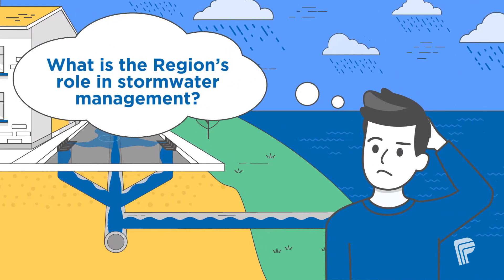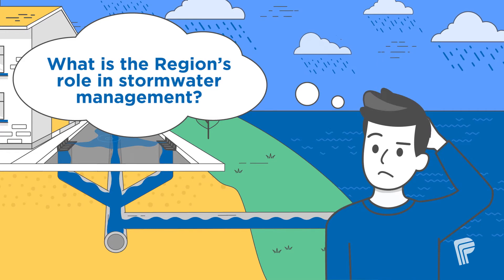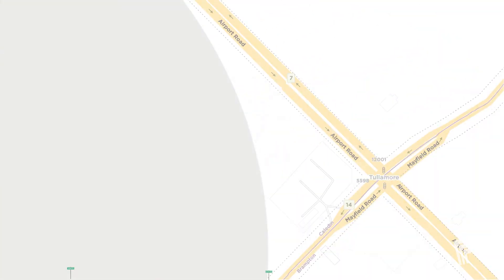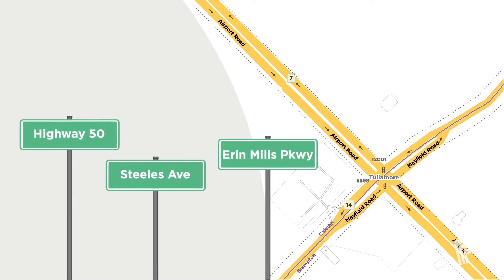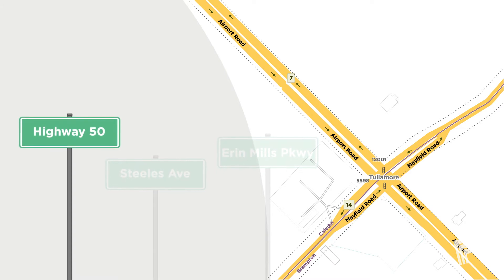So, what is the region's role in stormwater management? It is the Region of Peel's responsibility to manage the stormwater that falls onto regional roads, such as Steeles Avenue, Highway 50, and Erin Mills Parkway.